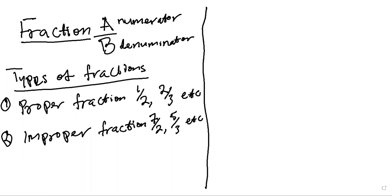So we have fraction here. In fraction, fraction is like a decimal — it's just a rounded version of decimal. Because in fraction, we have a fraction. So we have a over b right here. The a on top is the numerator, while the b is the denominator.